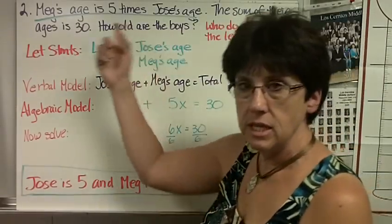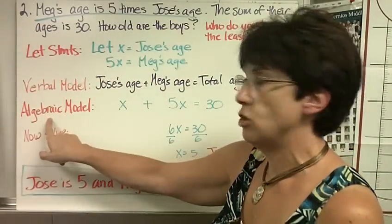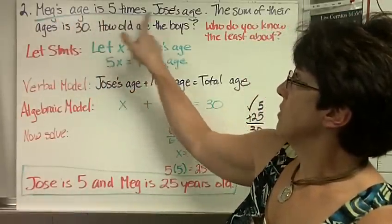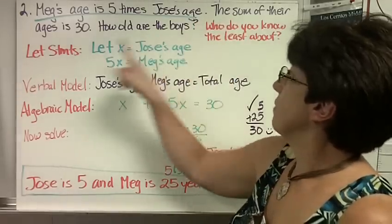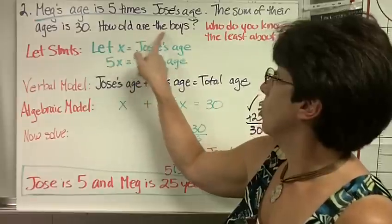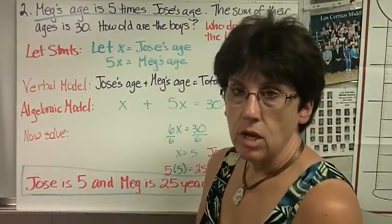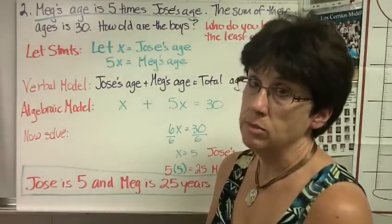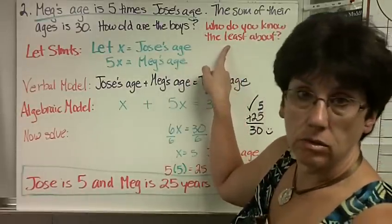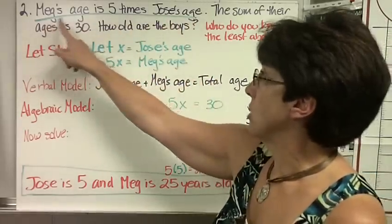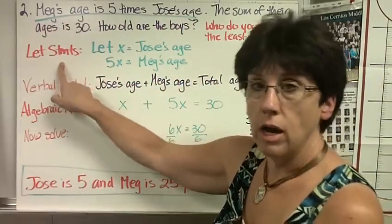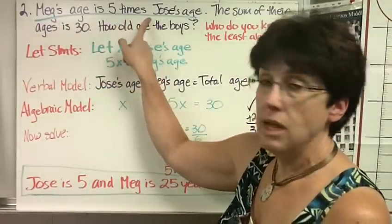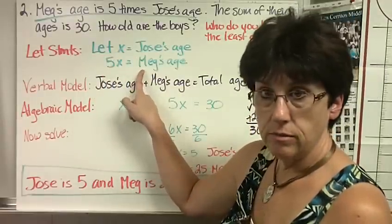Example two. Write down the example. The let statements, the verbal model, the algebraic model, and the solving problem. Meg's age is 5 times Jose's age. The sum of their ages is 30. How old are the boys? Now, some of you can just figure this out. And that's great. The point is not can you figure it out. The point is can you set it up the way I'm telling you. So, you think, who do you know the least about? Well, you know the least about Jose. I've underlined this, and you can see that it talks about Meg's age. So, here are our let statements. Let x equal Jose's age. And since Meg's age is 5 times Jose's age, 5x equals Meg's age.